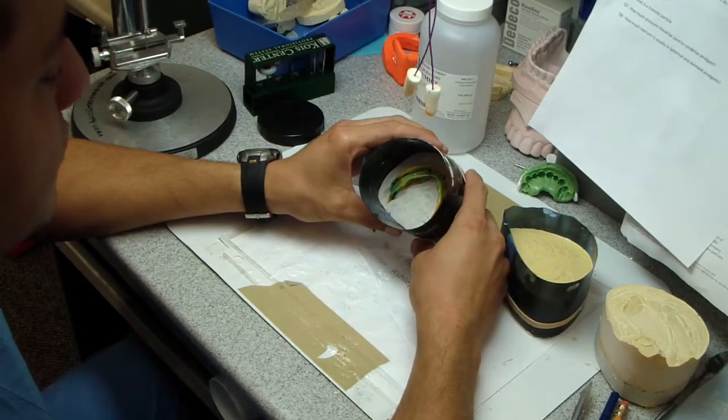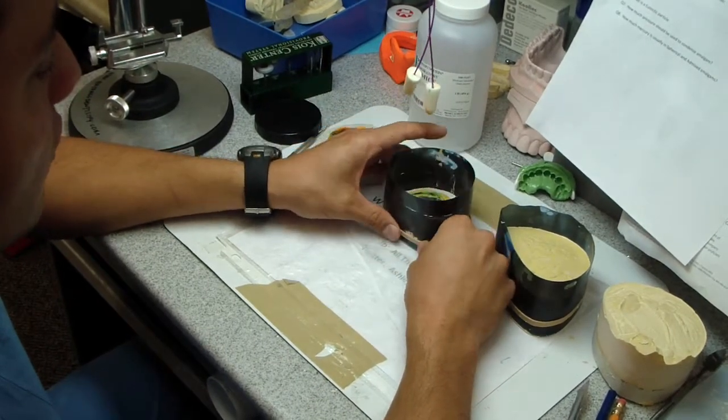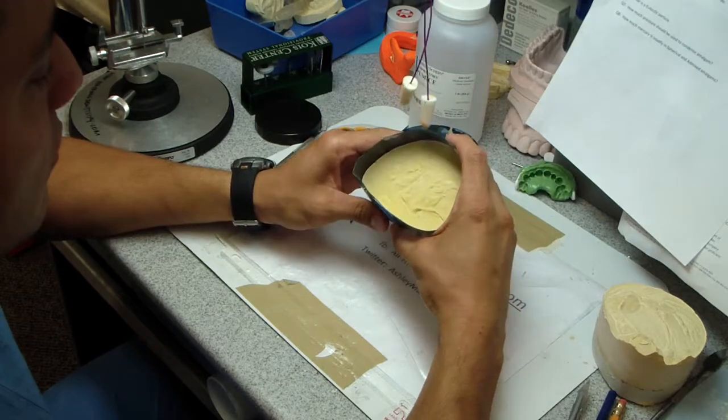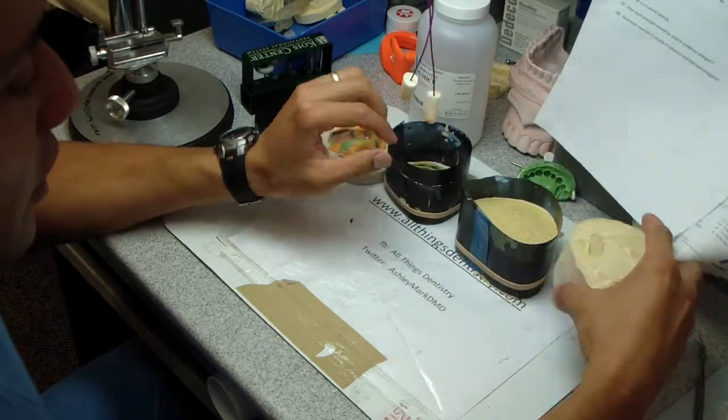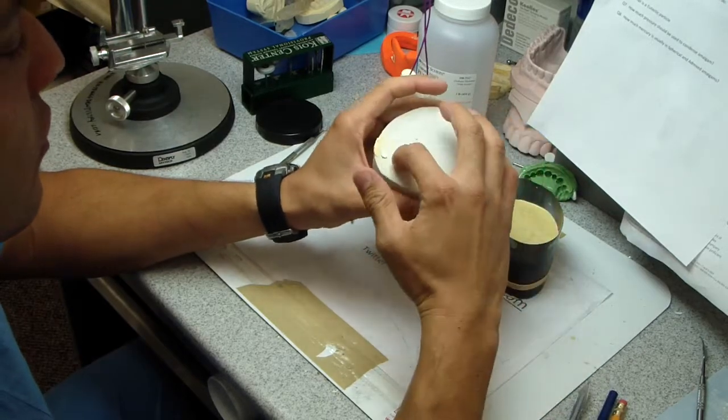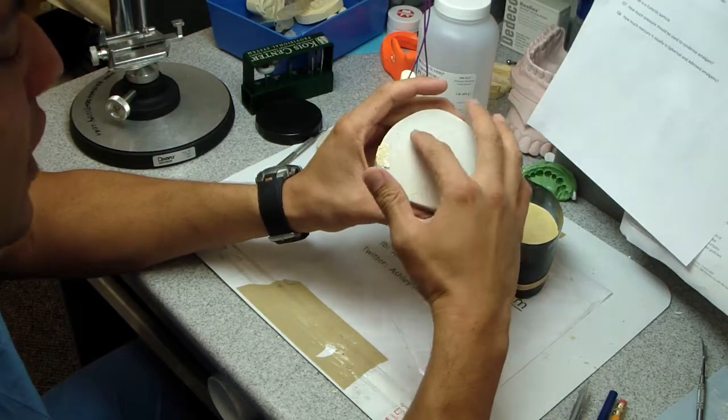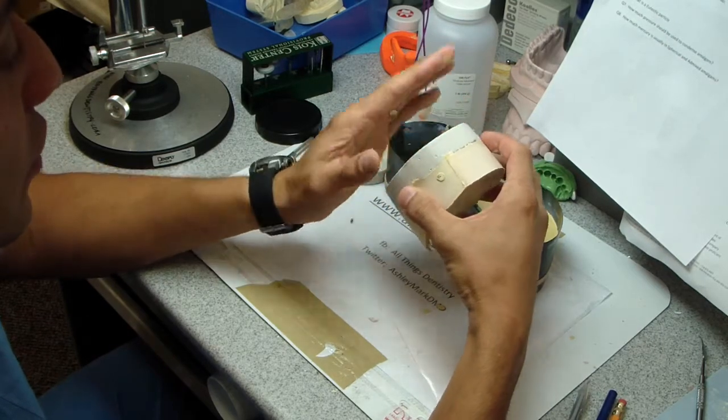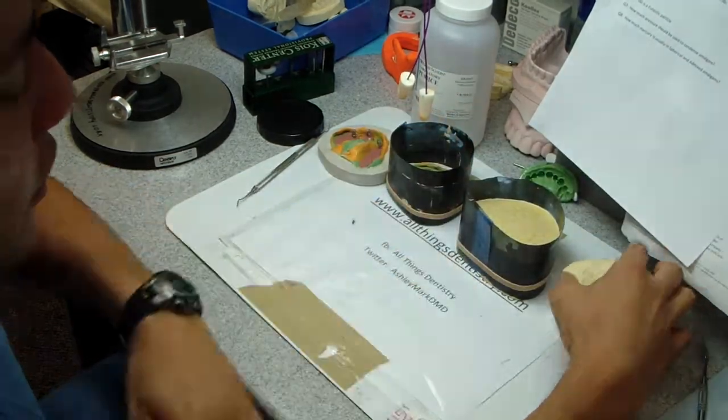Then we boxed it and poured in some stone, and here we are. So what we're going to do is let this set overnight, and then we're going to take the air hammer and fracture this, and then heat this up in hot water to melt the compound.